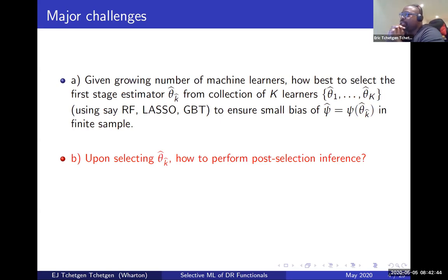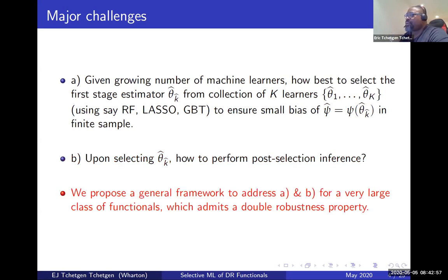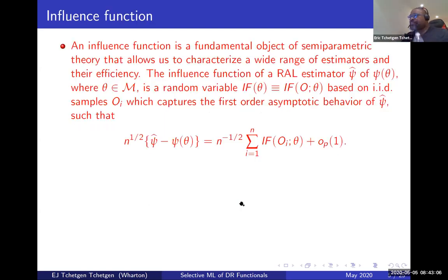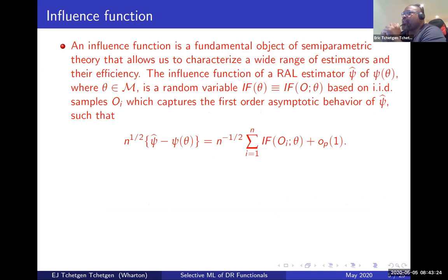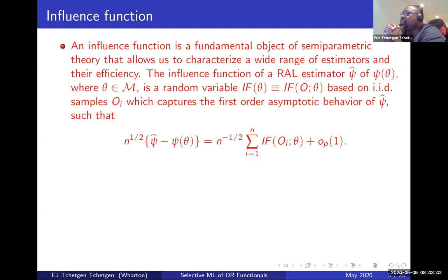The second question is: upon selecting a nuisance parameter adaptively, how do we perform valid inference that accounts for this first-stage selection of the machinery? We propose a general framework to address both problems for a large class of functionals that admit a doubly robust property. The theory is grounded in semiparametric theory, which automatically provides tools to derive estimating equations that satisfy the Neyman orthogonality condition.